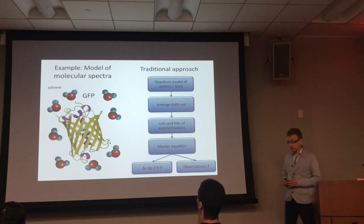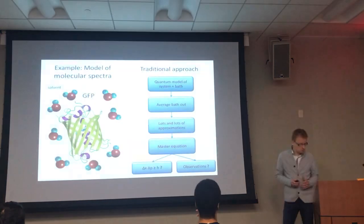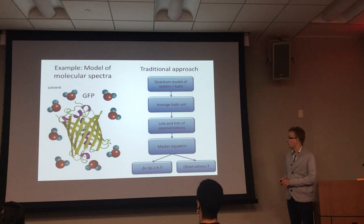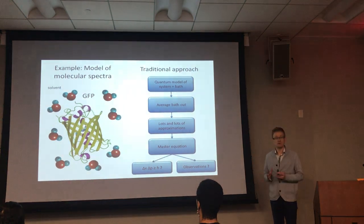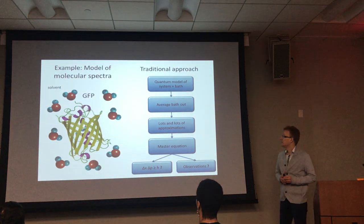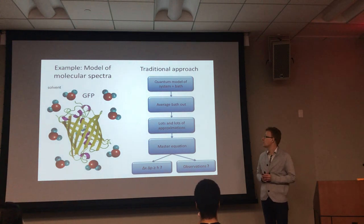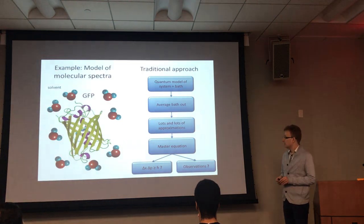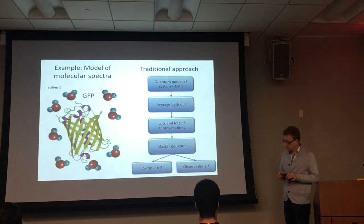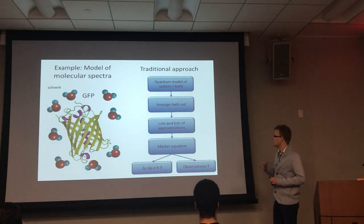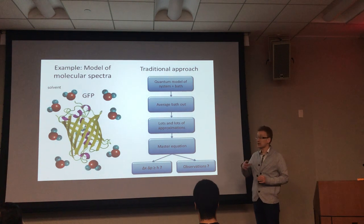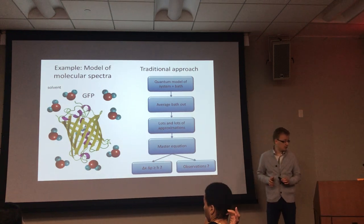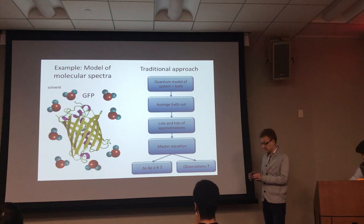When you have a large system - which is typically the case all the time - a quantum system is coupled to some reservoir, and the reservoir does something bad to the system. The evolution of the system of interest is not going to be unitary, and we would like to arrive at the equation of motion for that subsystem.